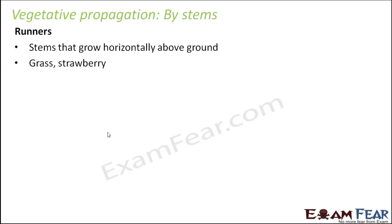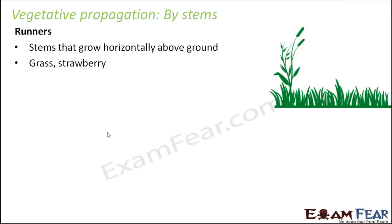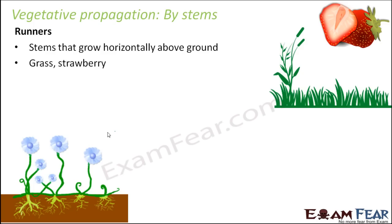Runners are seen in plants like grass and strawberry. The stems grow almost horizontally above the ground. Buds are formed at the nodes — at the nodes, roots develop below the soil, and above the nodes, stems develop. At each bud, a new plant arises. So here is one plant, here is another plant, and another plant, and so on. The new plant arises at the nodes.